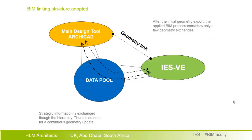BIM is too often confused with 3D modeling, while the most important aspect is the ability to exchange information in the form of schedules and tables, which can be properly done through the features present in both ARCHICAD and IES. The geometry export will be done a limited number of times during the project, as a continuous geometry update is not efficient. It is much more important to use large quantities of data to inform the design, then update the geometry at given steps when design is consolidated.